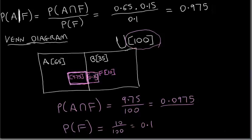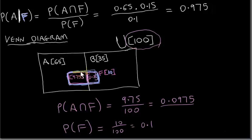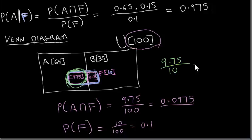An easier way to think of this: since we want P(A|F), we're conditioning on the bolt being faulty, so we're just selecting from the 10 bolts in set F. We make a random selection from those 10 bolts — each equally likely. The probability of selecting a bolt from the A∩F region is 9.75 over 10, which is 0.975.